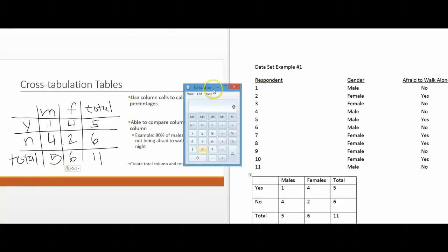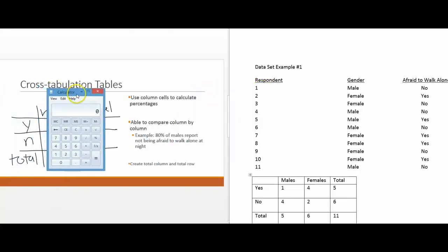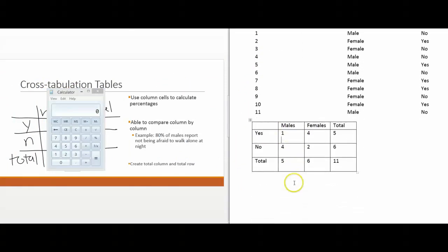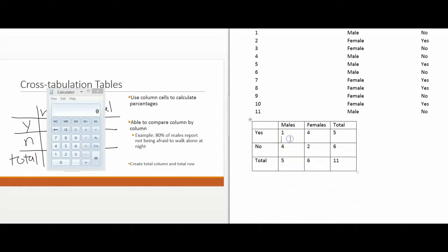The next step is to calculate column percentages. I recreated the table over here in our Word document. We calculate percentages within the columns. What this means is that we're going to calculate the percentage of males who said yes and the percentage of males who said no. For the males who said yes, there was one of them, and there was a total of five males. So we divide one by five, then multiply by 100 to get our percentage.